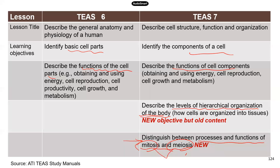Mitosis and meiosis are two different types of cell division — a process where one cell can divide and produce multiple cells. In our body, we have two different types of cell divisions, and these two types are used to make different cells in our body. I will go over that in more detail later in this presentation.